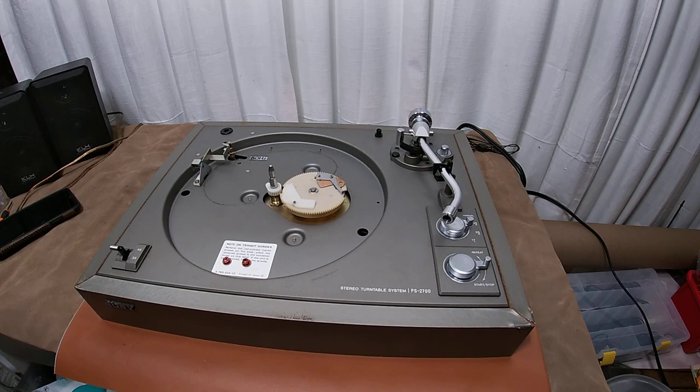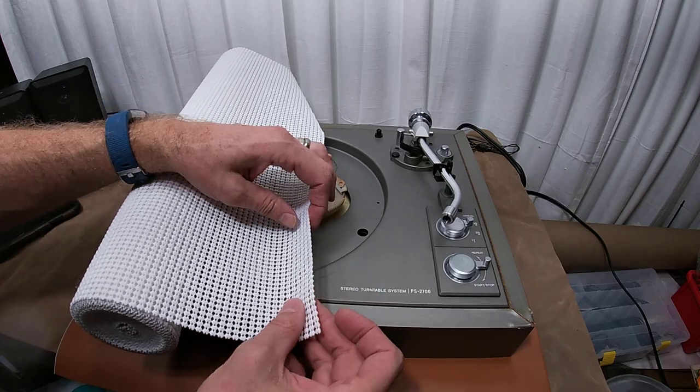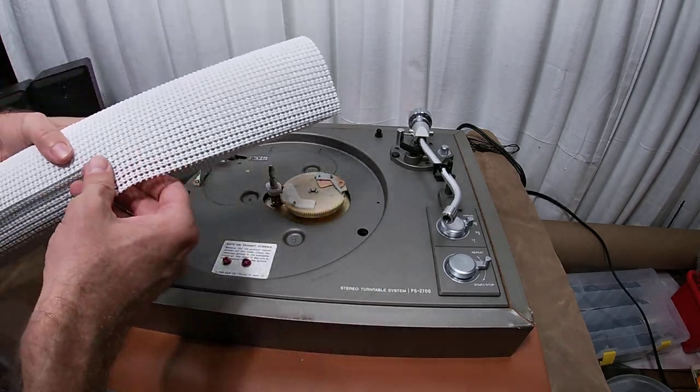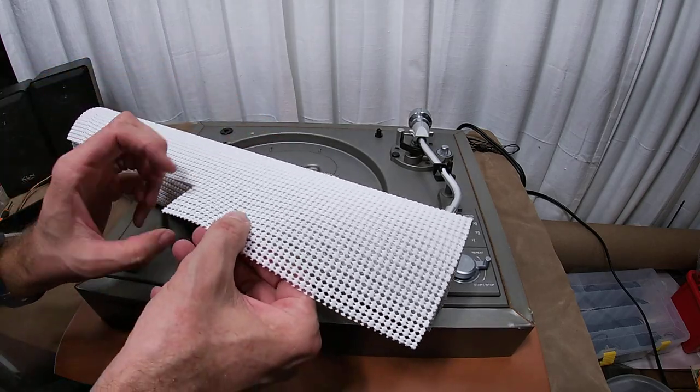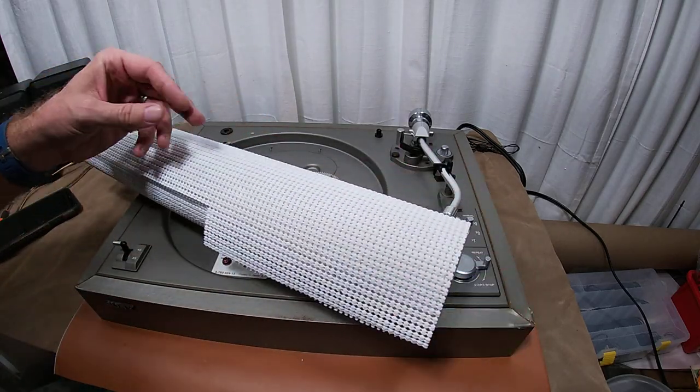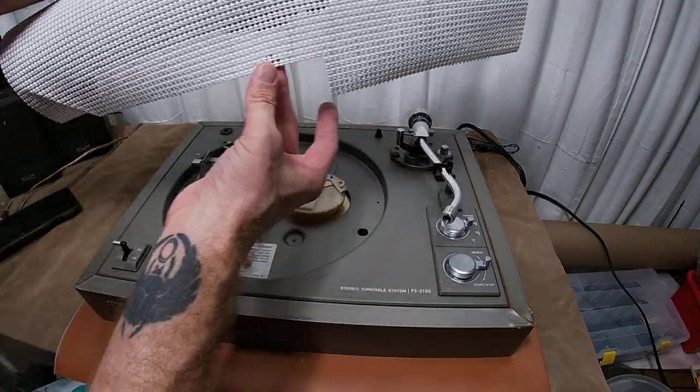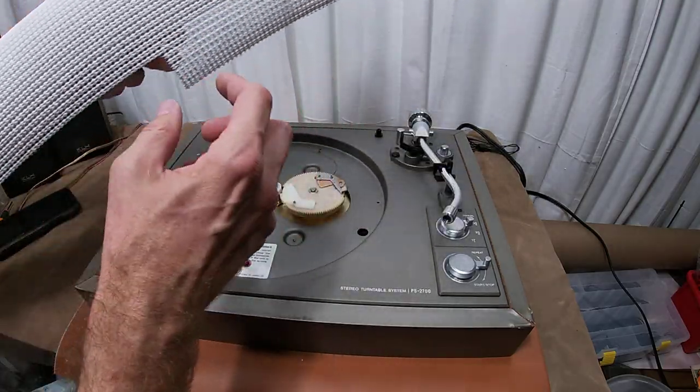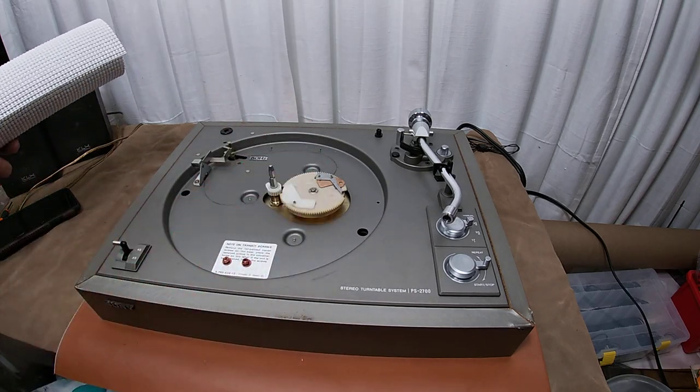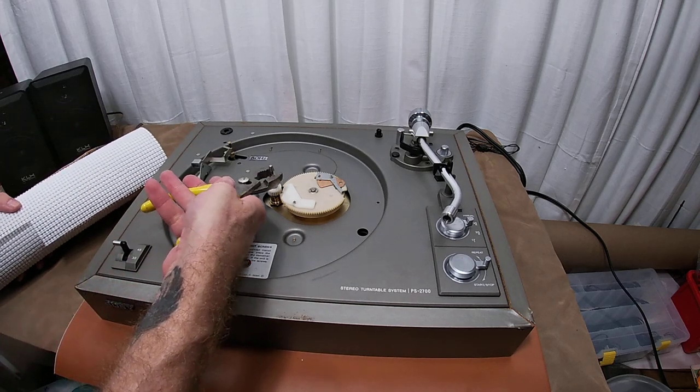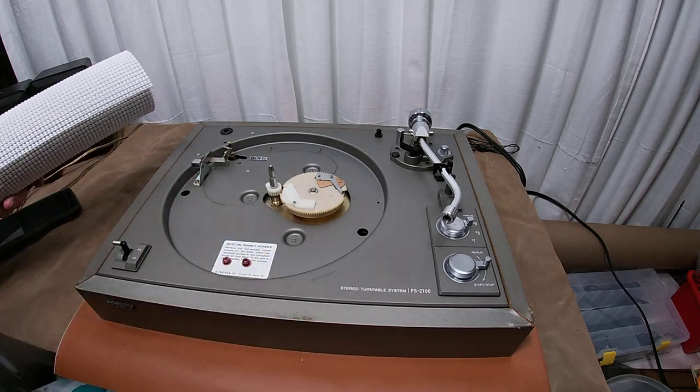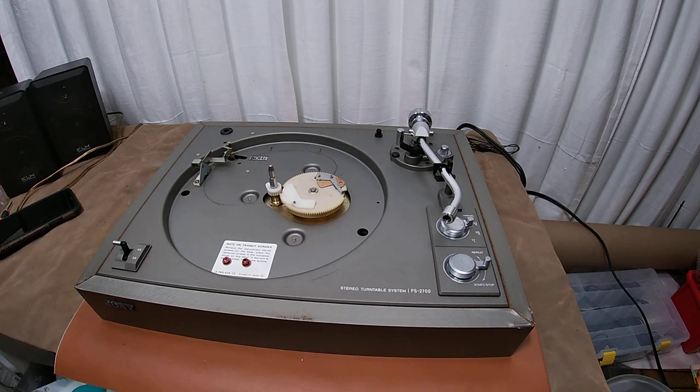Now you don't want to damage the spindle at all when you're getting it loose. So you'll want to grab some of this kitchen drawer liner, it's just this nice rubbery stuff. You'll want to cut off a little strip of it and wind it around this and then take a pair of pliers and just lightly work it back and forth until you get a little bit of movement.